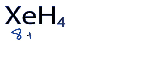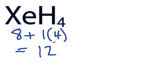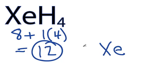Xenon has 8 valence electrons. Hydrogen has 1, but we have 4 hydrogens, for a total of 8 plus 4, 12 valence electrons. We'll put xenon in the center, and then hydrogens on the outside.